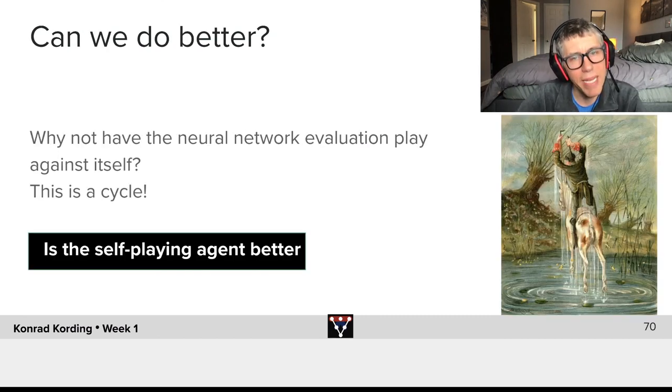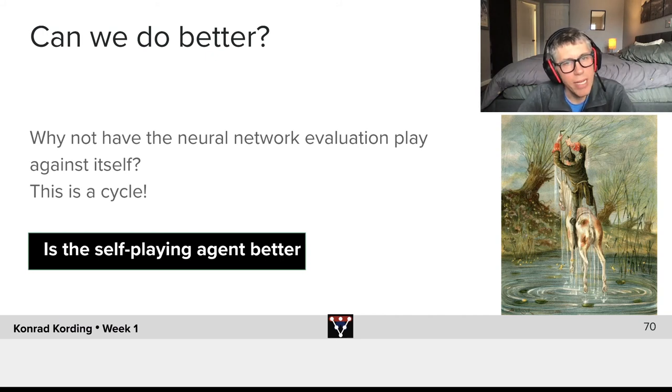So can we do better? Well, why not have the neural network evaluation play against itself? It's like a circle. And now the question for you is explore that and see if the self-playing agent is better than the agent that plays against the value function that you hand constructed.